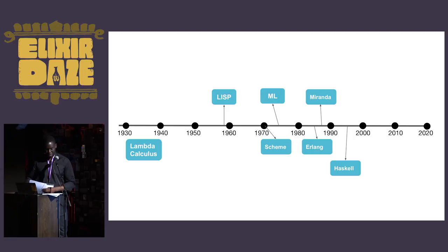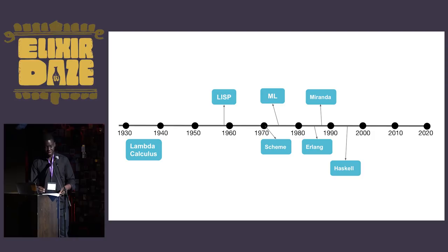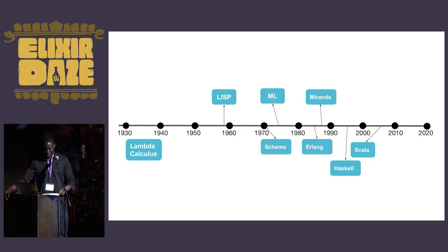The next phase is what I call the Renaissance. Following the late 1990s, we see a resurgence of interest in functional programming characterized by attempts to make it useful within industry. Languages are now being led by industry practitioners, not university researchers. It all begins in 2004 with Scala — a functional programming language that runs on the JVM, and although object-oriented, borrows heavily from Scheme, Haskell, and ML. F-Sharp, a direct descendant of the ML family, was introduced in 2005 and built on Microsoft's .NET platform.